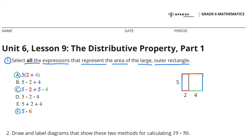Select all the expressions that represent the area of the large outer triangle. I selected A: 5 times 2 plus 4. I selected C: 5 times 2 plus 5 times 4. And I selected F: 5 times 6.